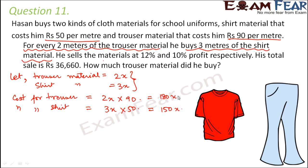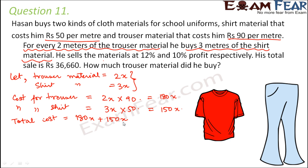So his total cost is 180x plus 150x. That is the total amount he paid to buy all the material. Now once he bought this, he sold these items. He sold the materials at 12% and 10% profit respectively.